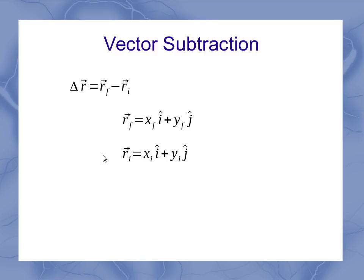When I do my vector subtraction, what I see is in the i hat direction, it's x final minus x initial, and for the j hat direction, it's y final minus y initial. That tells me what my final position minus initial position is.